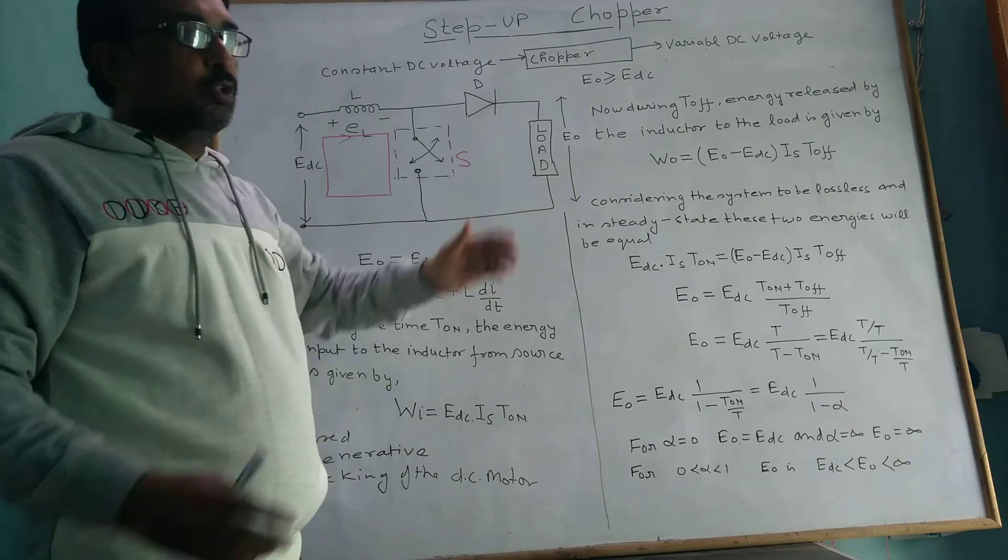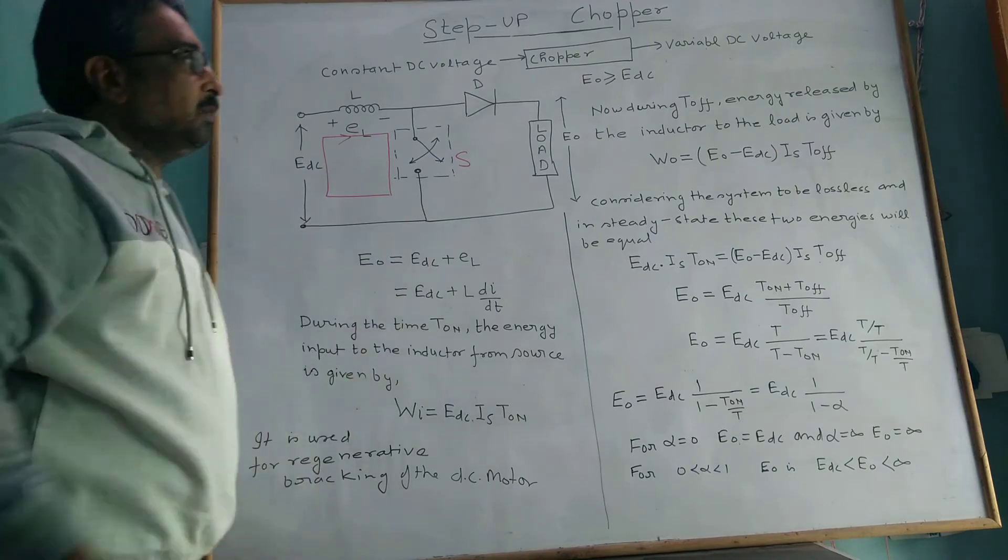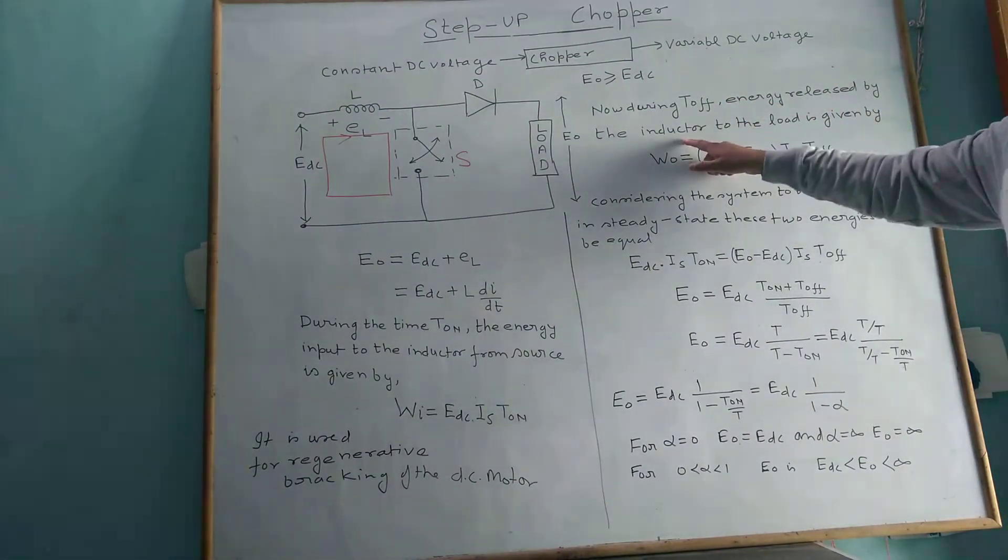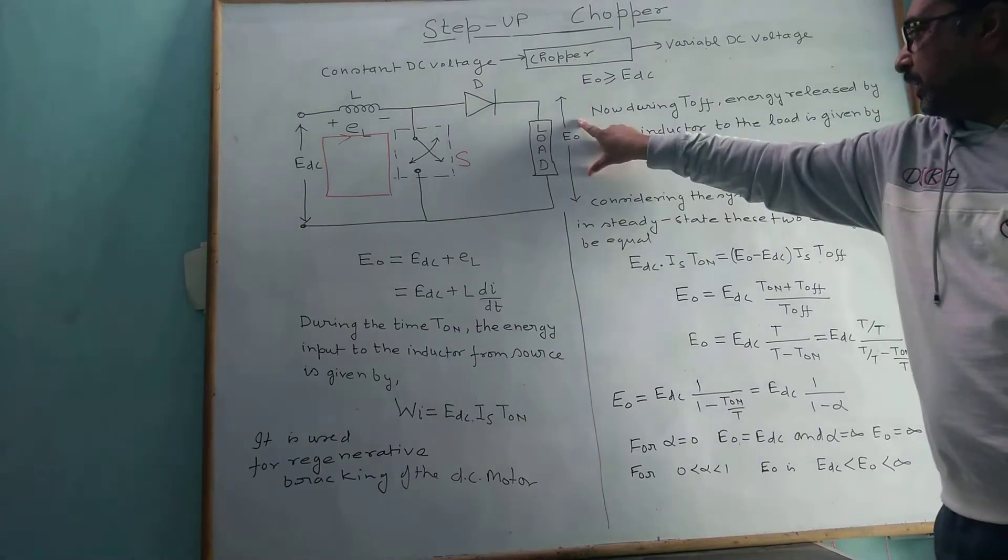During the turn-off time, energy released by the inductor is W₀ equals E₀ minus E_DC into voltage.